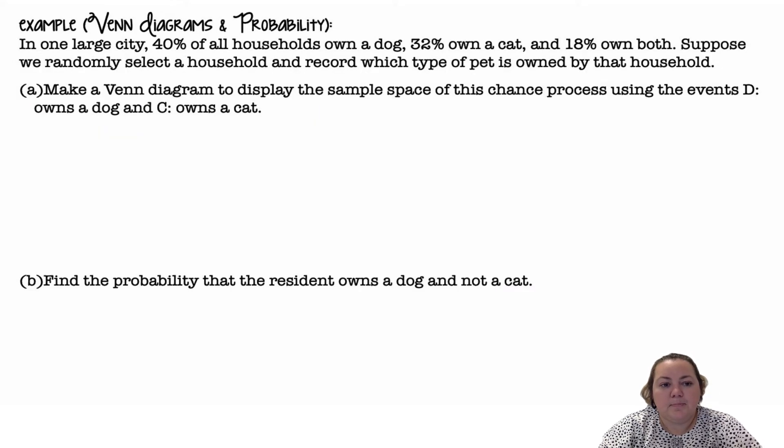Venn diagrams. In one large city, 40% of all households own a dog, 32% own a cat, 18% own both. Suppose we randomly select a household and record which type of pet is owned by that household. Make a Venn diagram to display the sample space of the chance process using the events D equals own a dog and C equals own a cat.